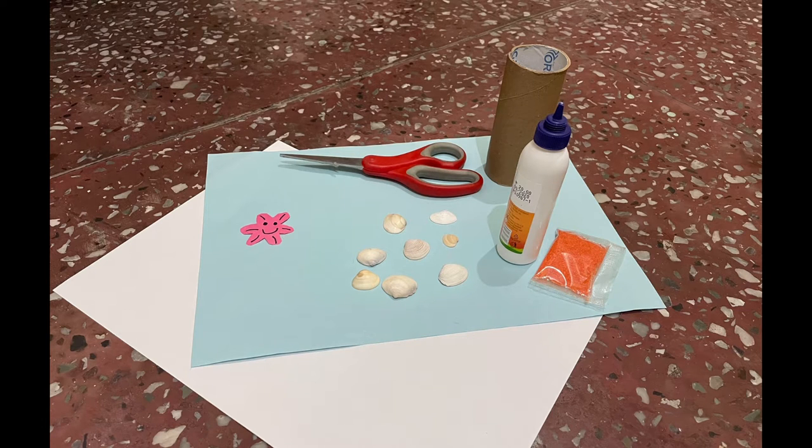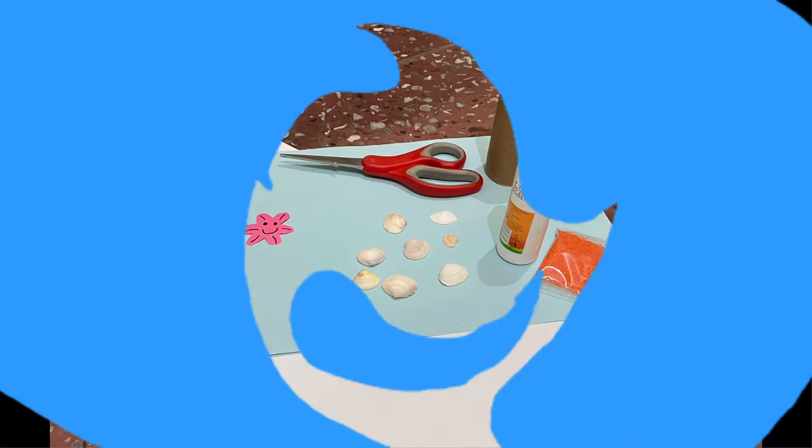For this craft we will need a starfish cutout, a few seashells, a pair of scissors, a blue paper and a white paper, a cardboard roll, some glue and some sand.